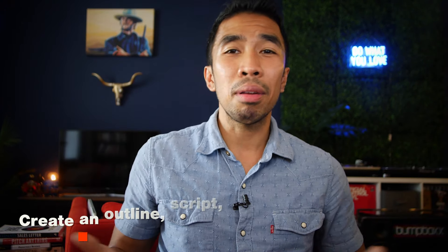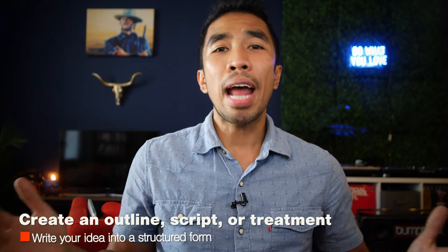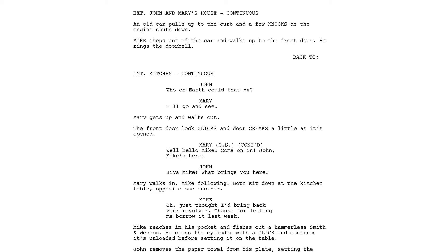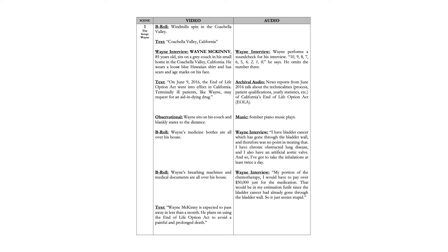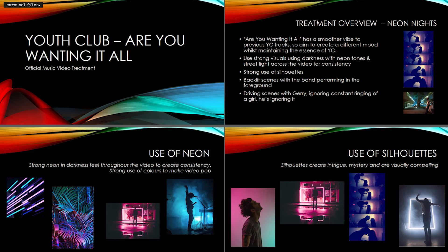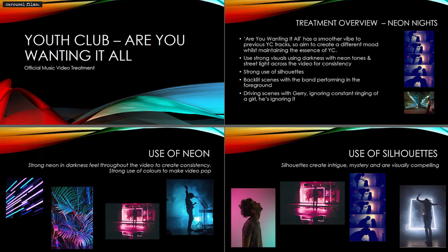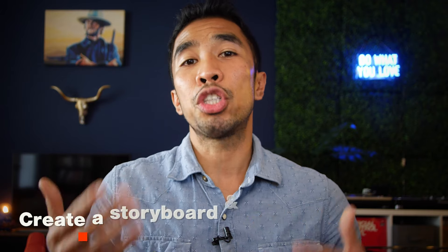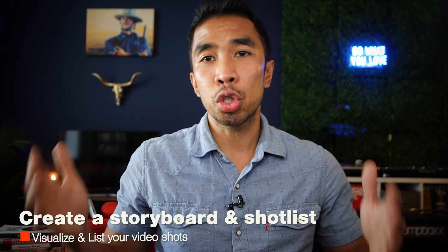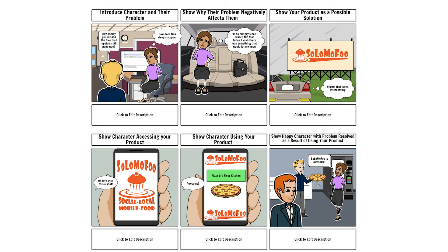From there, it's time to create an outline, script, and treatment. Write an outline for how the video will be structured from intro to outro, and include key story elements and messaging. From there, you can write a script — it can be a normal film or TV script or a documentary-style script with two columns. You can then start creating a treatment or mood board using reference photos and video references to create a deck or series of slides to illustrate the video idea visually.